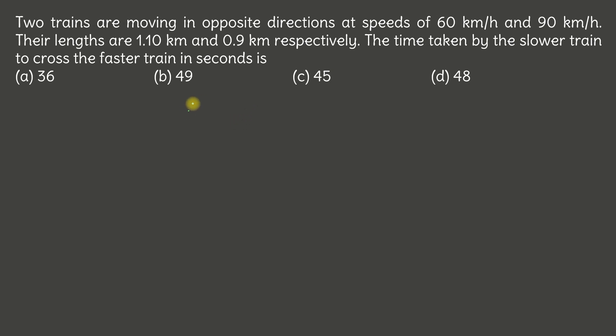Now this is a very straightforward question actually. Two trains are moving in opposite directions at speeds of 60 km per hour and 90 km per hour.